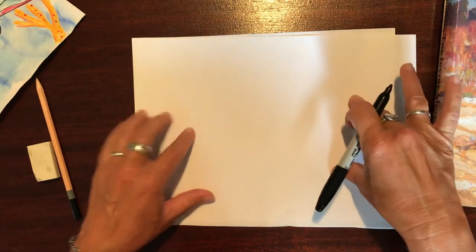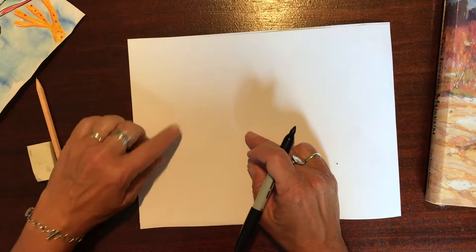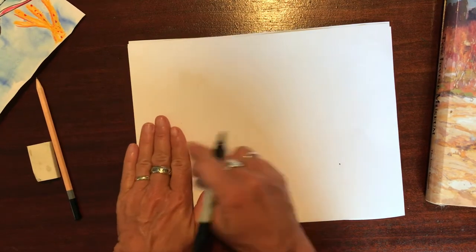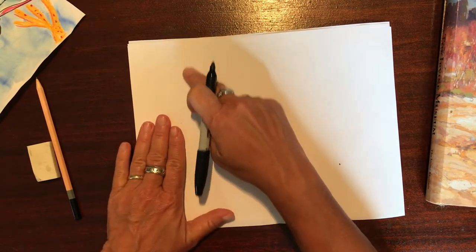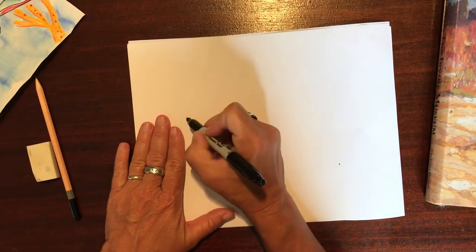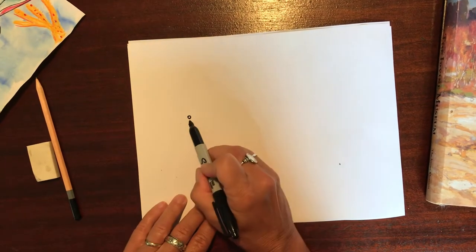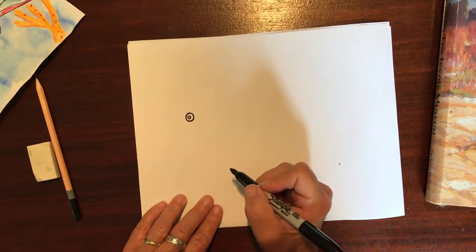The parrotfish's eye is a little closer to the top of his head, so maybe go about four or five fingers in from your paper and then maybe about halfway down. We're going to start by drawing a parrotfish eye. It's just a tiny little circle, and then you could do another circle around it.